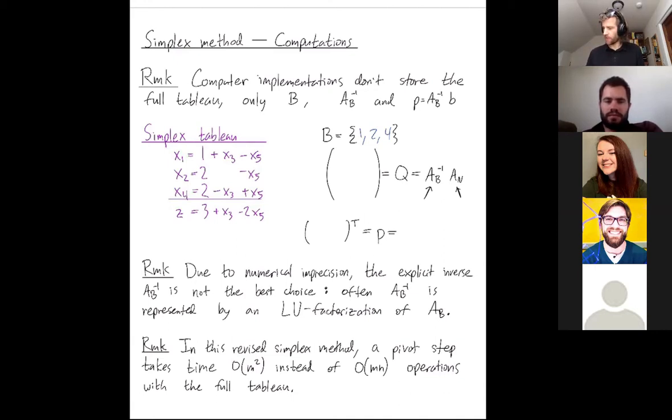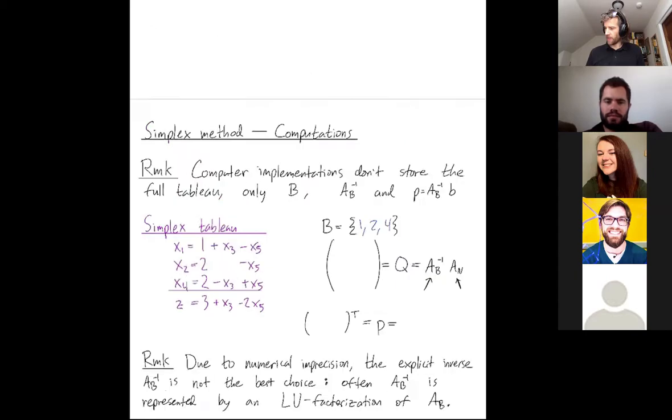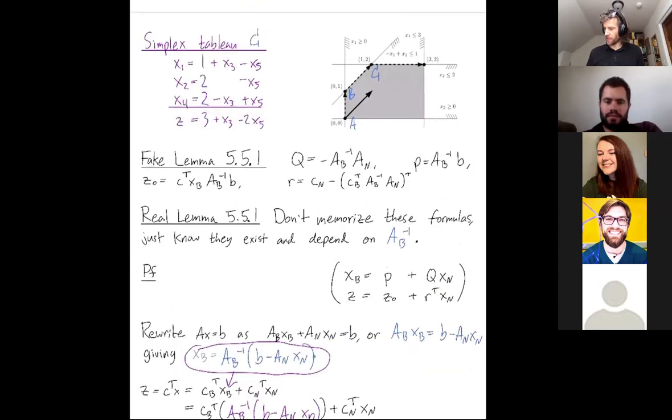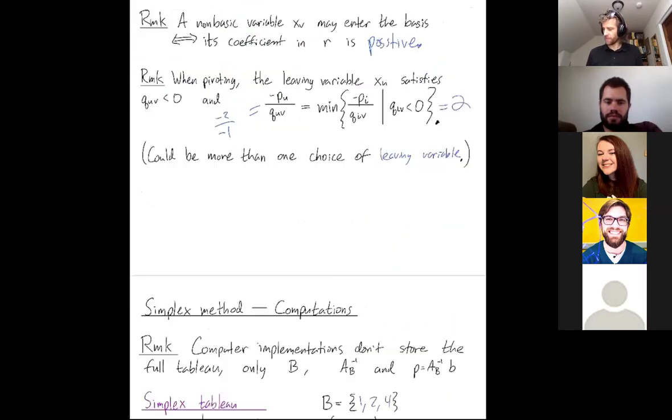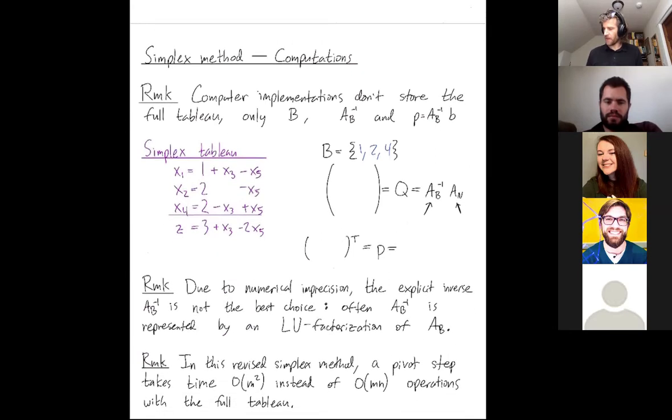And furthermore, they keep track of this matrix AB inverse. If you remember from our prior video, AB inverse is critical in giving the formula for all the other entries in our tableau. And they keep track of P, which is the coordinates of your current vertex in your feasible region.